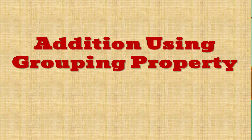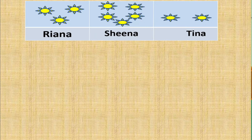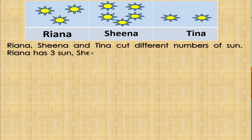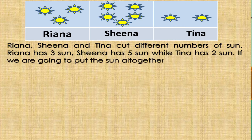Children, our lesson for today is about addition using grouping property. Mga bata, tingnan natin ang mga objects. Ito ay mga drawings nila Rihanna, Sheena, and Tina. Rihanna, Sheena, and Tina cut different numbers of suns. Rihanna has 3 suns, Sheena has 5 suns, and Tina has 2 suns. If we are going to put the suns all together, how many in all? We need to add the number of suns to get the total.